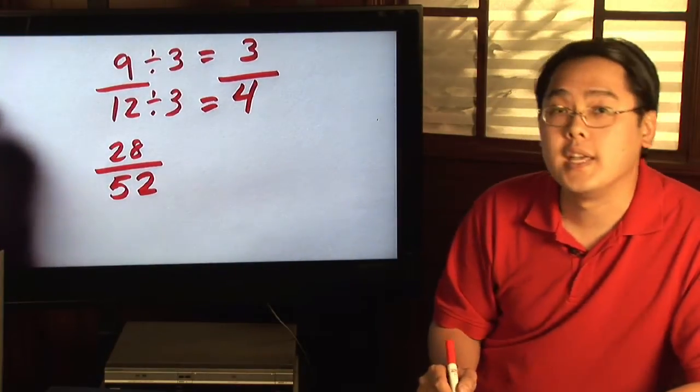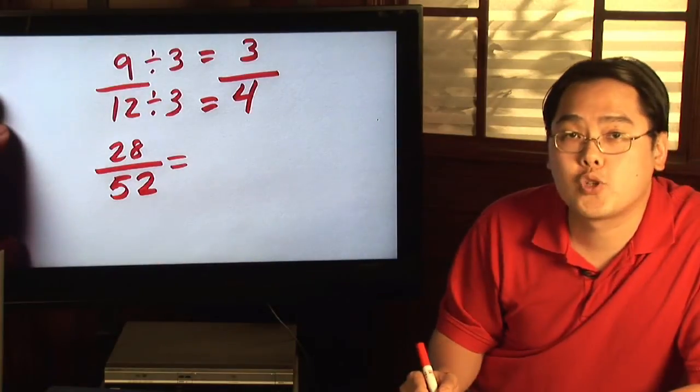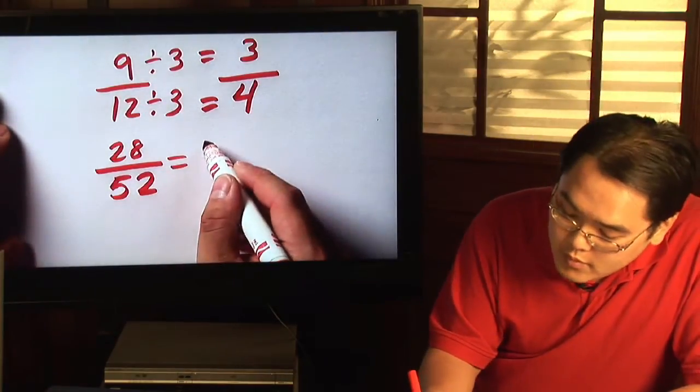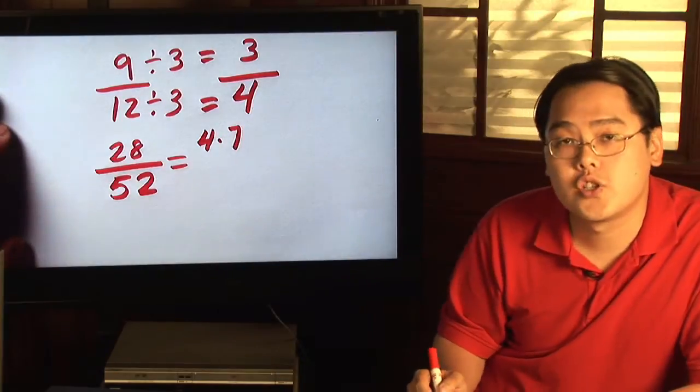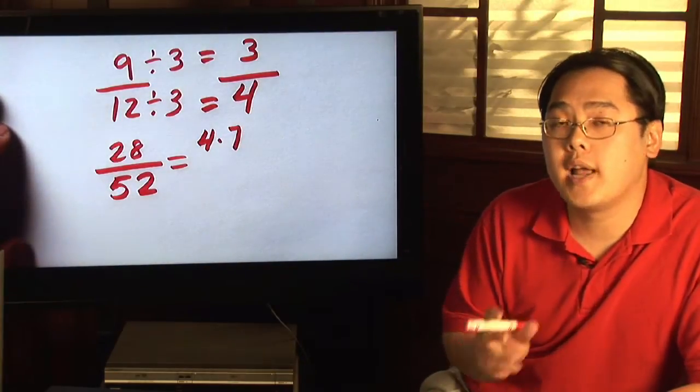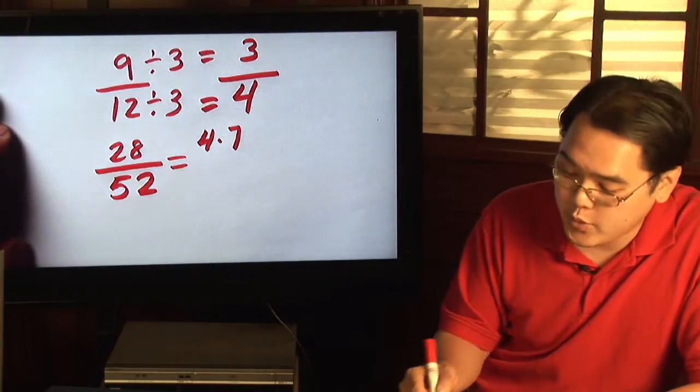Now one thing about 28, you know that it's 4 times 7. So you can write the numerator and denominator as a combination of numbers multiplied with each other.